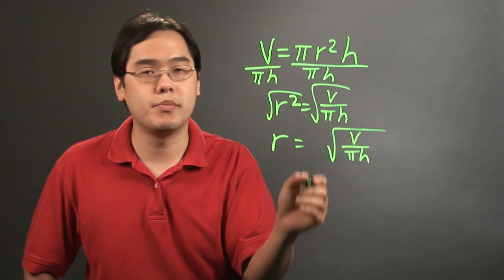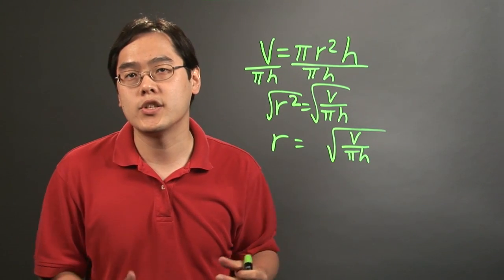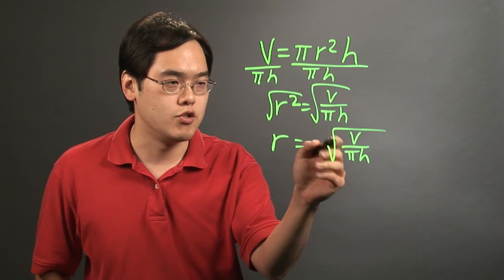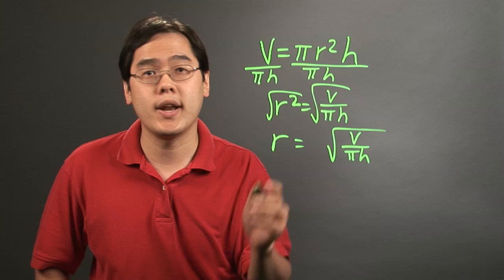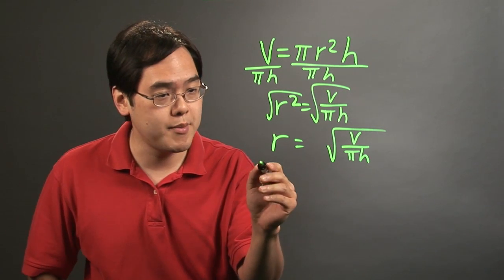When you take the square root of both sides, there's usually plus or minus, but since the radius is generally assumed to be positive, you just don't write the plus or minus. Now at this point, this will give you whatever the radius happens to be. Now to find the diameter...